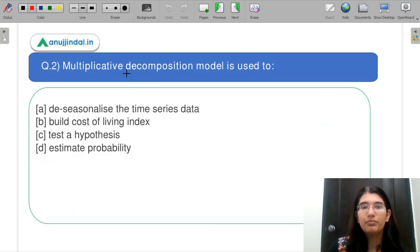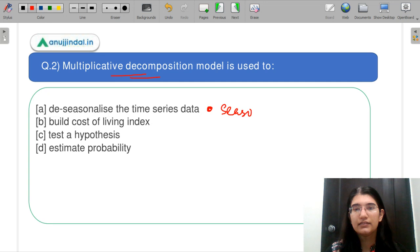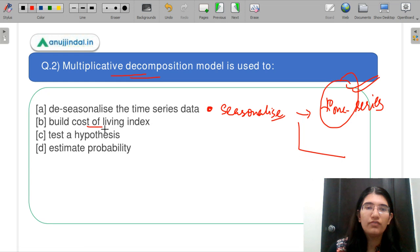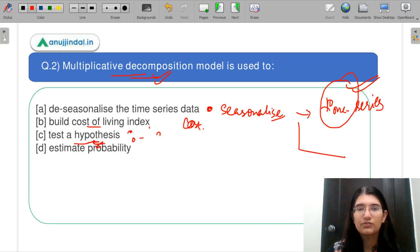Question number 2. Multiplicative decomposition model is used to: A part says de-seasonalize the time series data. Koi bhi agar seasonality hai aapke model mein, usko hattane ke liye time series mein isko use kiya jata hai. Time series data which is related to your time. Time ke against, aap kuch plot kar rahe hai. B part hai aapka, built cost of living index. Agar jo cost of living index hota hai, uske liye use hota hai multiplicative decomposition model. Test a hypothesis. Hypothesis ko test karne ke liye hota hai. Aap stats mein aapne hypothesis binaate hai, H naught ki terms mein. D part keh raha hai, estimate your probability. Jo ki probability hoti hai, kisi event ki hone ki, usko test karne ke liye aap use karte hai.